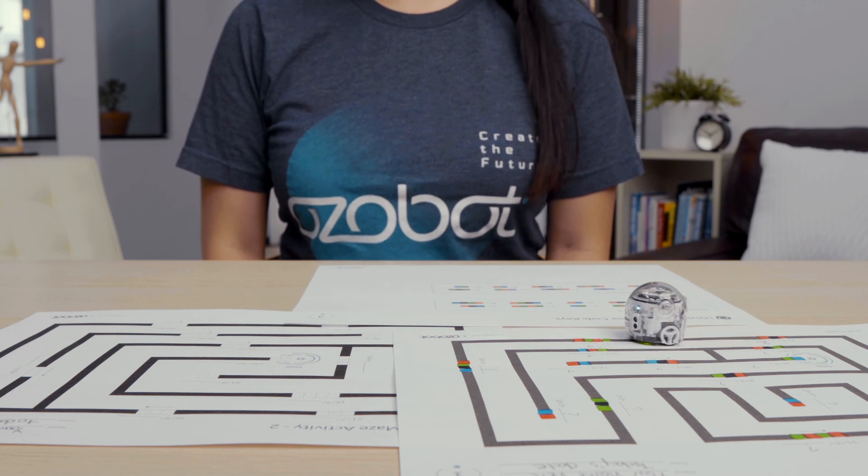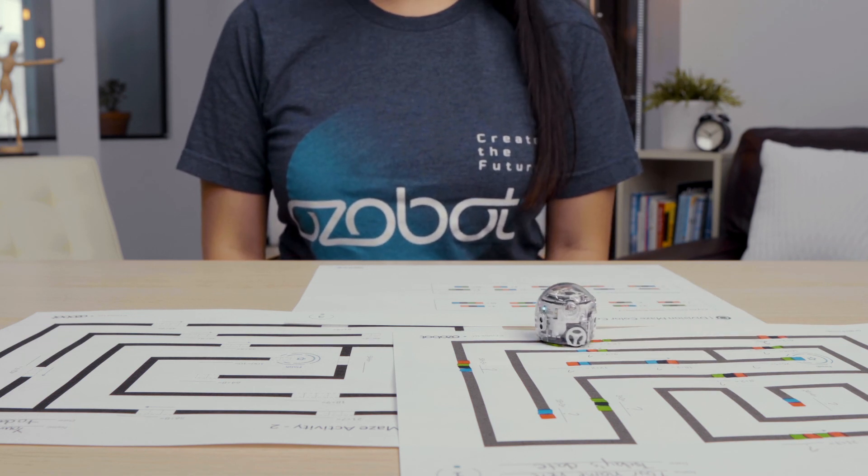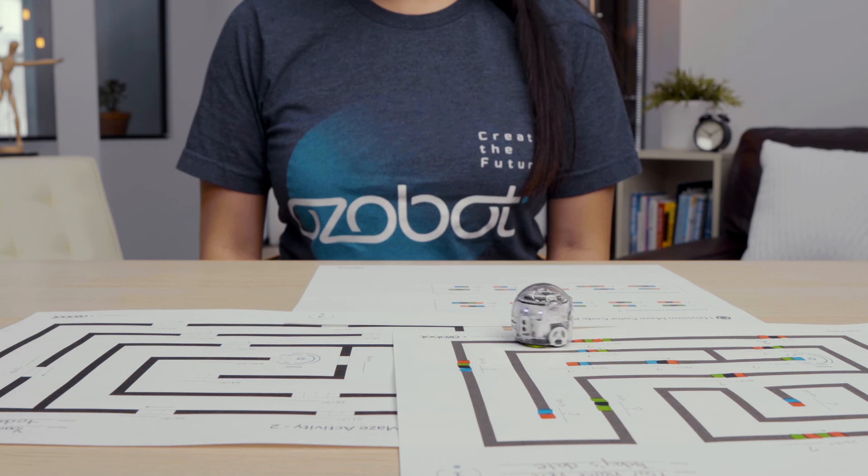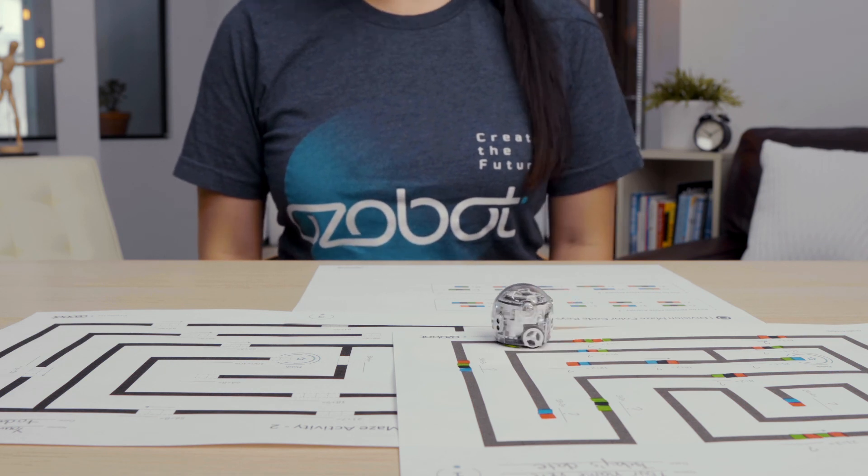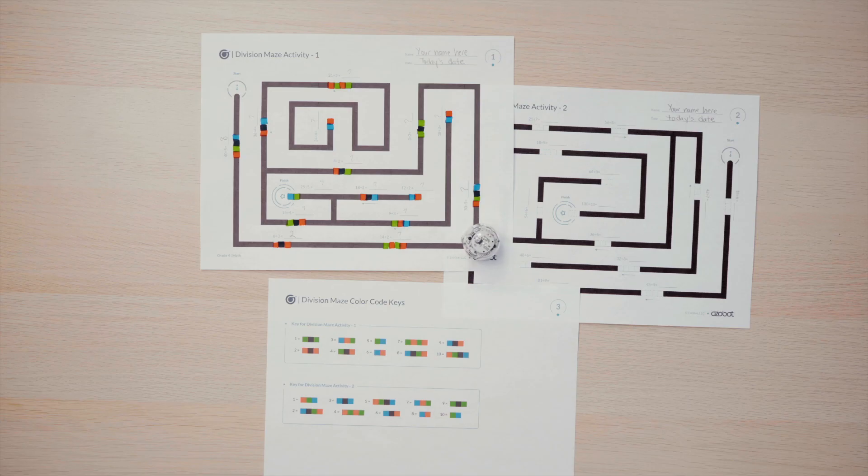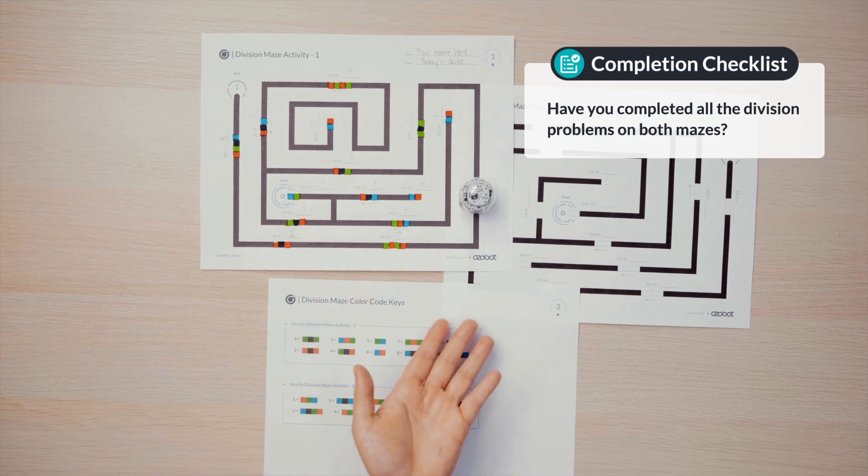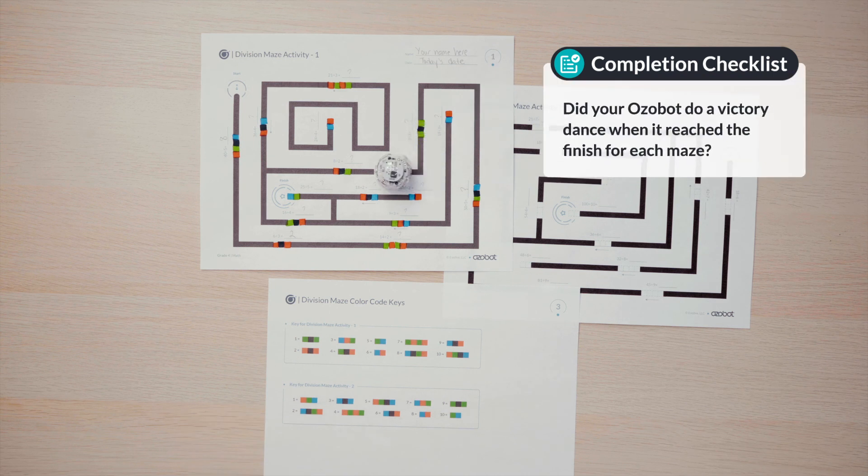Nice work finishing all those division problems and color codes. Did your bot do a victory dance at the end? Let's double check that your work is complete. Have you completed all the division problems on both mazes? Have you filled in the correct color codes? And did your Ozobot do a victory dance when it reached the finish for each maze? Come back again soon for our next lesson.